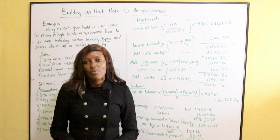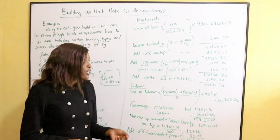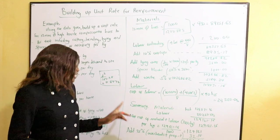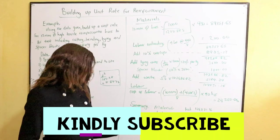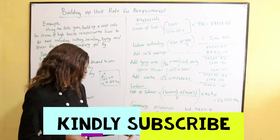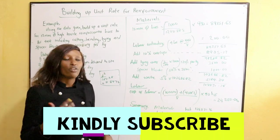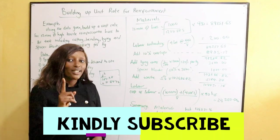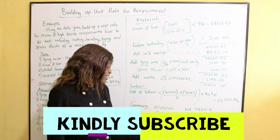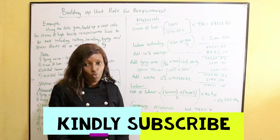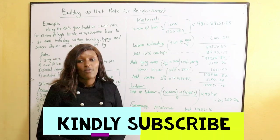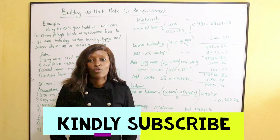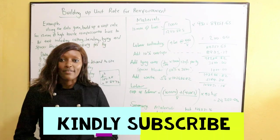No plant or equipment is used here. Total cost = materials + labor = 108,871.16 + 20,250.06 = 129,121.16 shillings for 1,000 kg. Dividing by 1,000 gives 129.121 shillings per kg. Adding 25% for overheads and profit (32.18 shillings), the final unit rate for 12mm reinforcement bars is 161.40 shillings per kg.